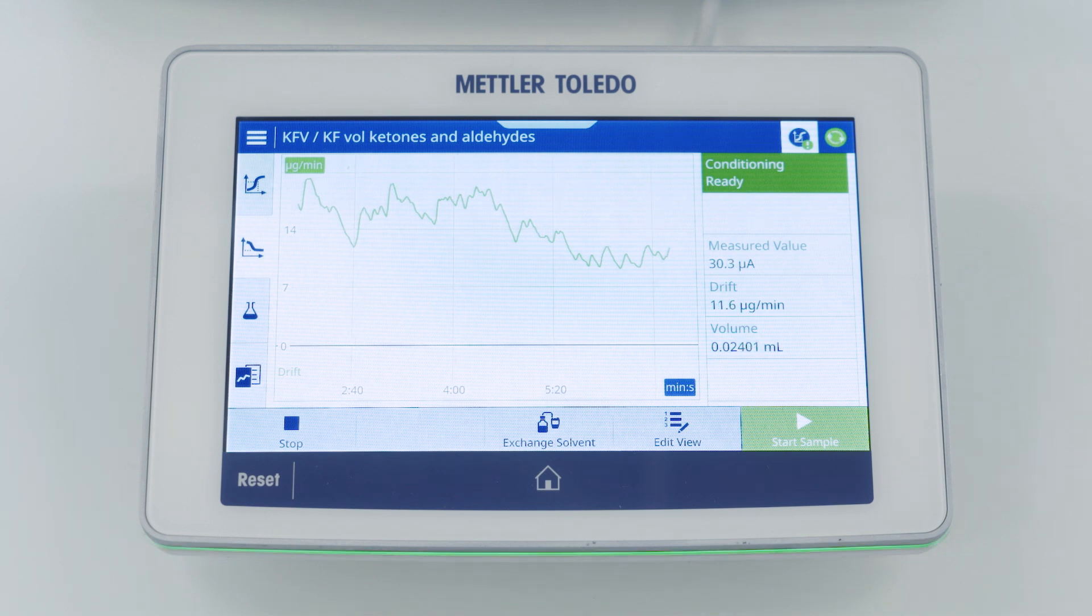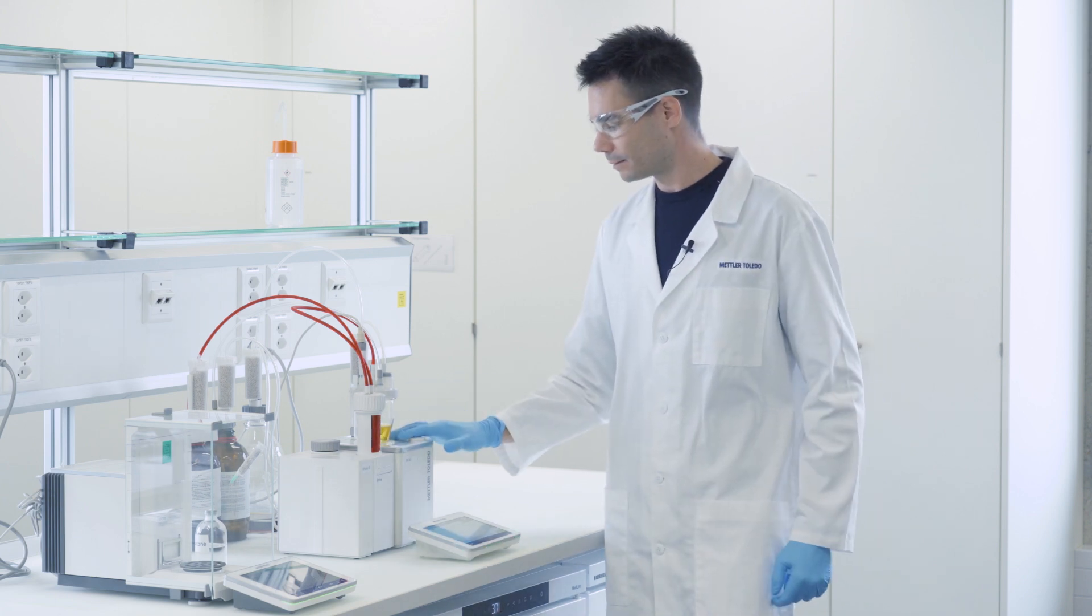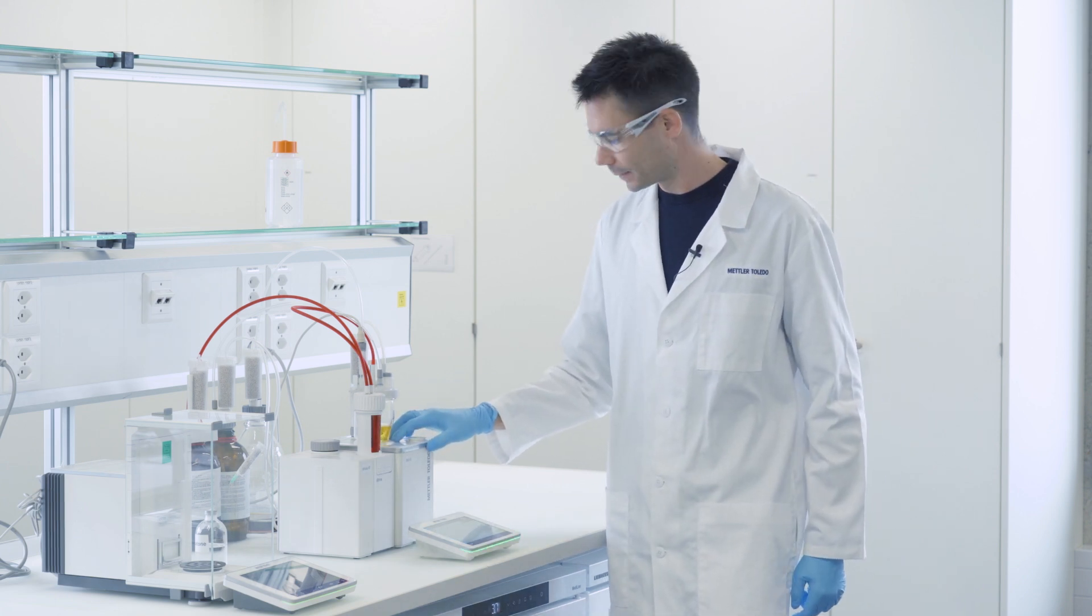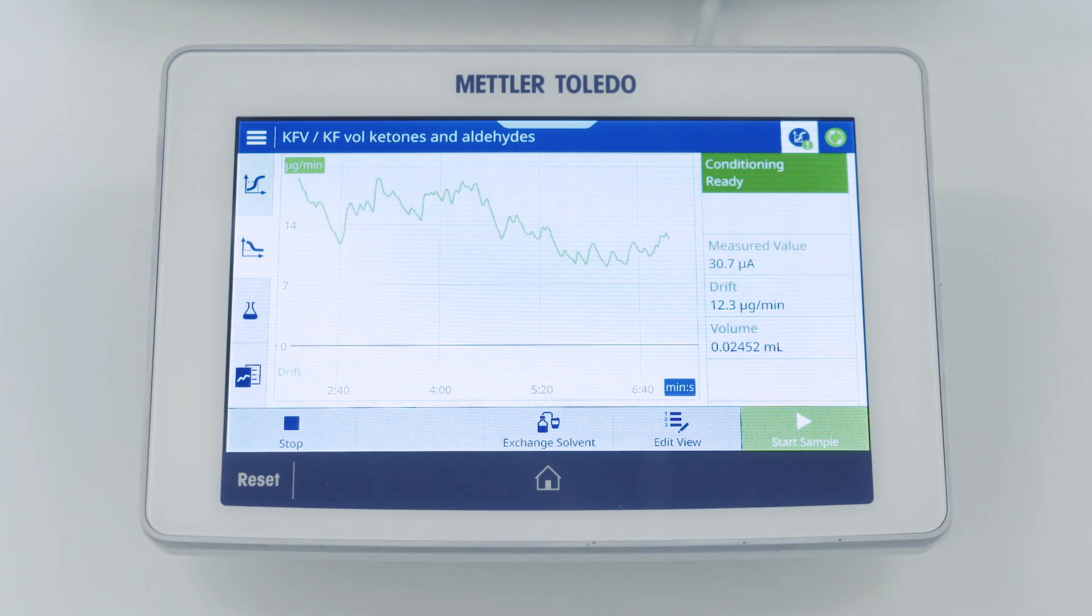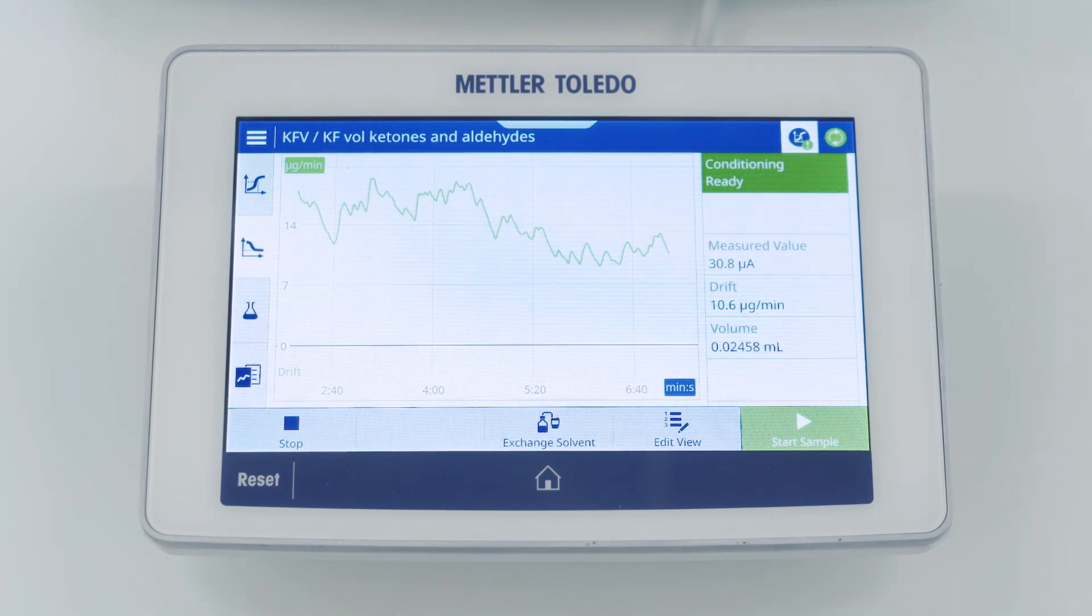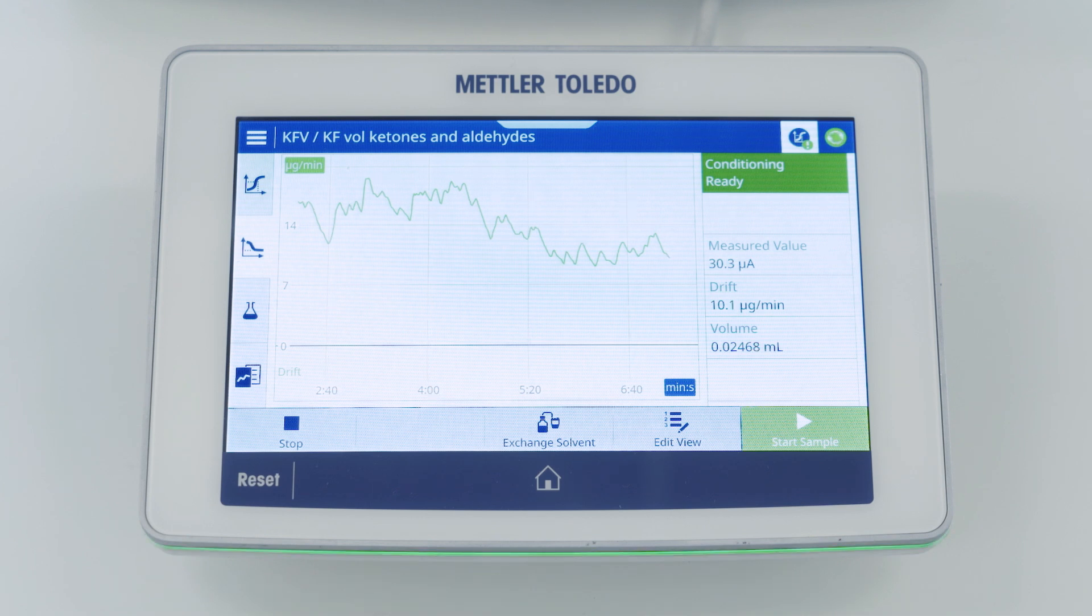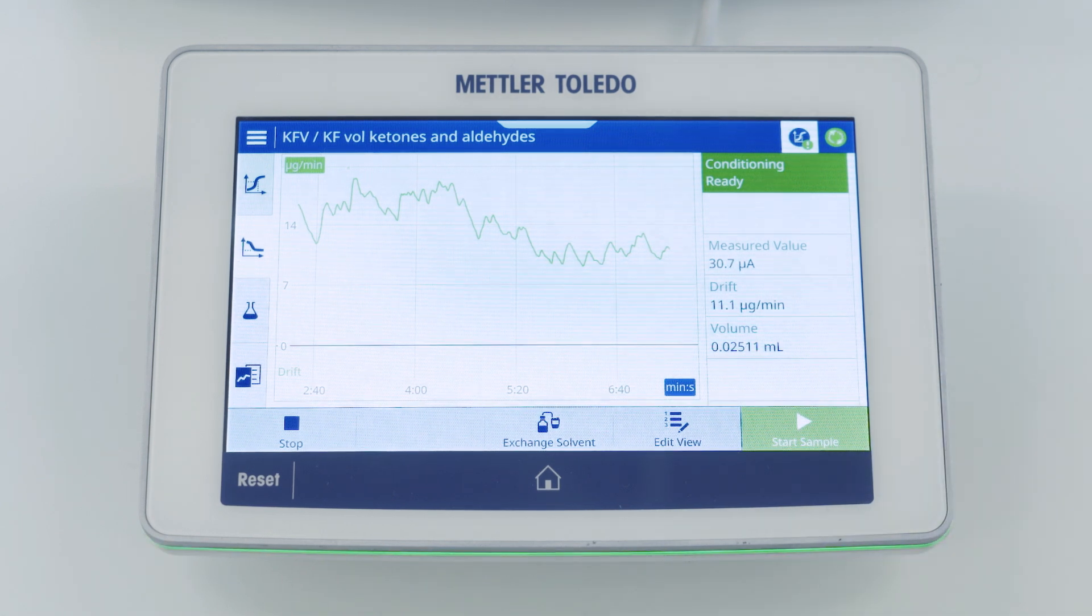Now the first thing that the titrator has to do when we start the method is making sure that the titration cell is water free. To do this we first do a so-called conditioning. In the conditioning we check that the drift value, which shows how much water is getting into the cell per amount of time, is as low and stable as possible. If the titrator finds that the drift is low and stable enough we can start the sample, which is the case now because the start sample button is lighted green.